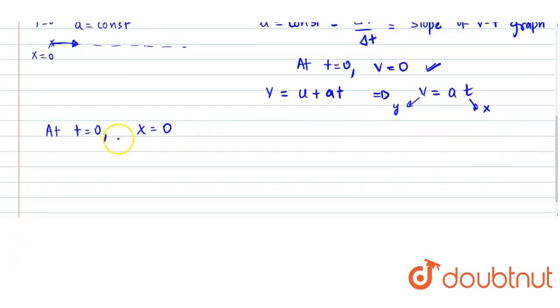Now, if I have to plot the x-t graph, I can use the equation s equals ut plus half a t square. Initial speed is 0, so that would be half into a into t square.